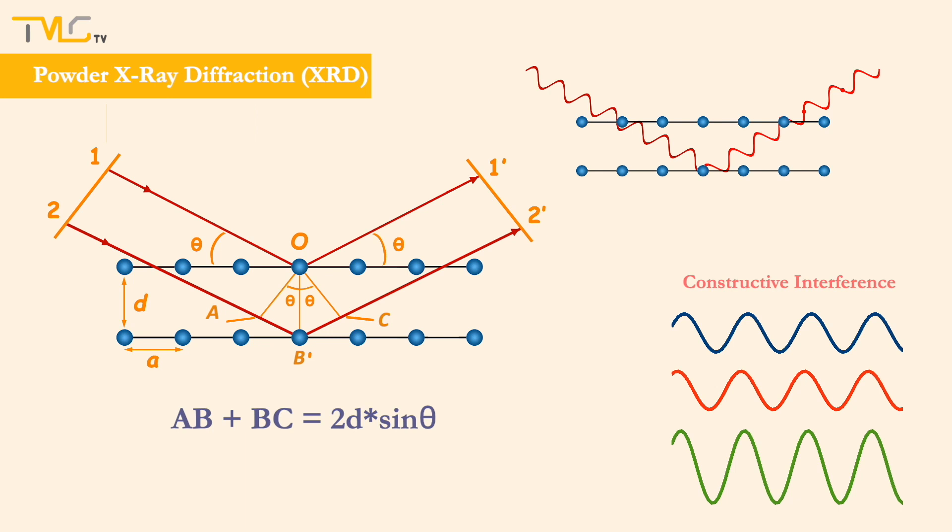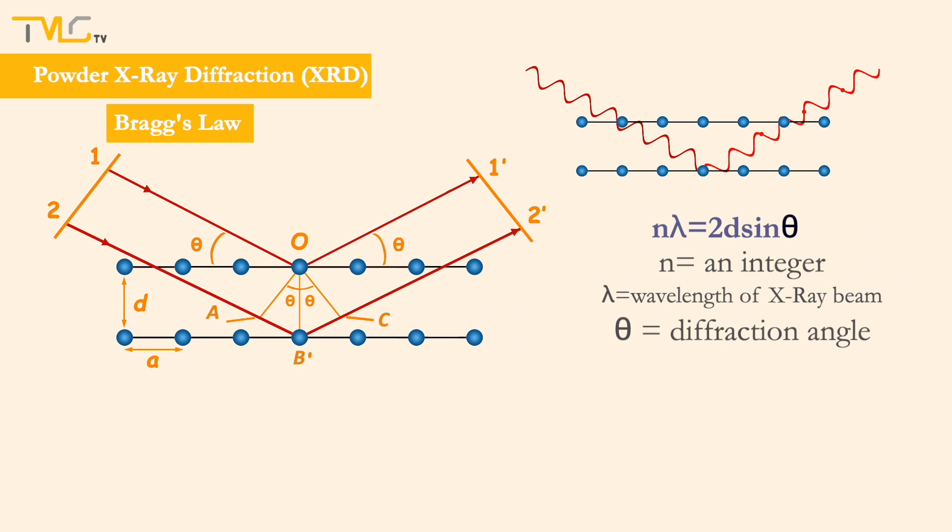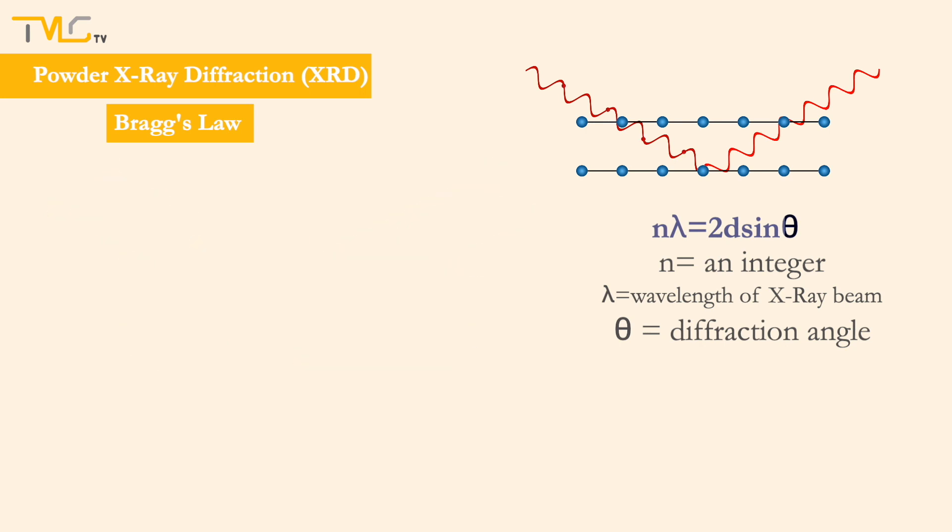This correlation was theorized in Bragg's law and represented as nλ = 2d sin θ. Here, n stands for an integer, λ for the wavelength of the incoming X-ray beam, θ for the angle between the diffraction plane and the incoming beam, which is equal to the angle between the diffraction plane and the diffracted beam, and d for the interplanar spacing, which is equal to the distance between two layers of a selected crystal plane.